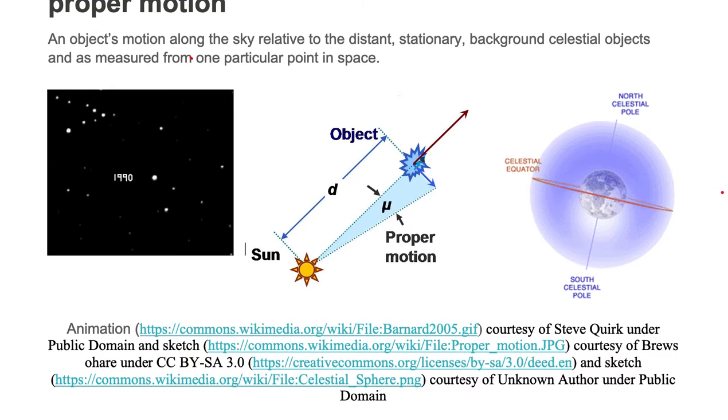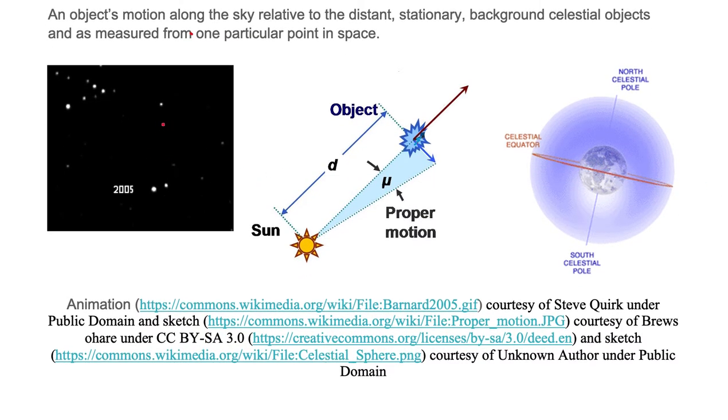Here we're looking at Barnard's Star on our left. If you take a look at where it is in 1985, we can trace its path down through 1995, 2000, 2005, and it's moving in that direction where the arrow is indicating. That is its proper motion, which I will give the symbol mu.